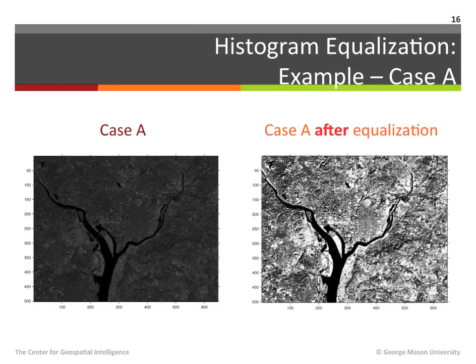To demonstrate the effect of histogram equalization on image quality, let us explore how this process affects two of the cases we examined earlier. The image on the left is the image used in case A before histogram equalization. The image on the right is the same image after applying histogram equalization. As can be seen, the improvement both in terms of the contrast and in terms of the overall image brightness is evident.